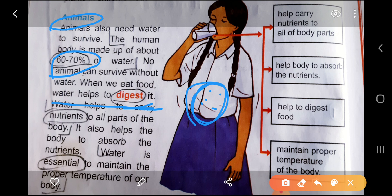Nutrients to all parts of the body and it also help body to absorb the nutrients. And water is essential to maintain proper temperature, that is also plants need and animals. Help carry nutrients to all of the body parts, help body to absorb the nutrients, help to digest food, maintain proper temperature of the body.